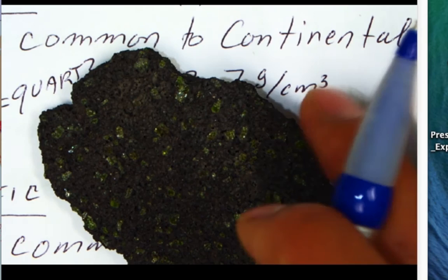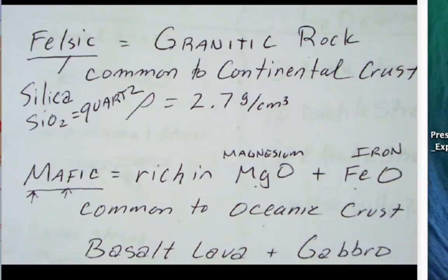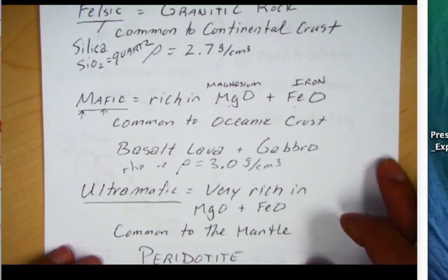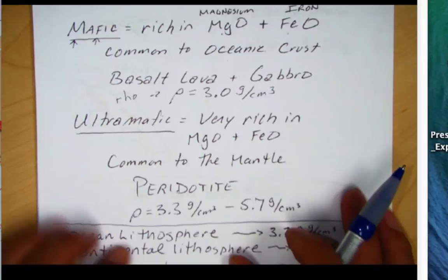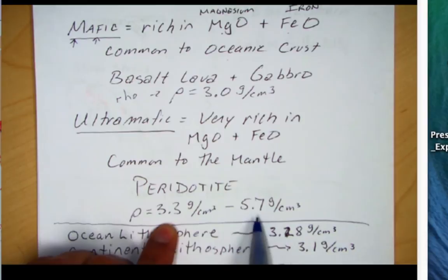The next category is ultramafic rocks. We've already said a little bit about these — that's the rock of the mantle. You should know by now that that rock is called peridotite. Note that it's very rich in magnesium and iron, common to the mantle, and its density ranges from 3.3 to 5.7 grams per centimeter cubed as you go deeper into the mantle.